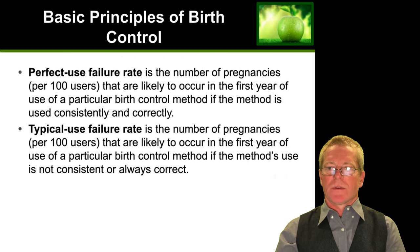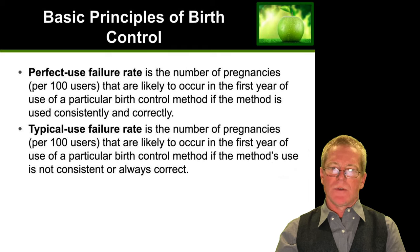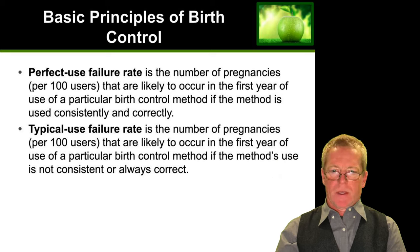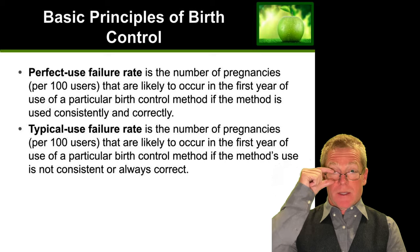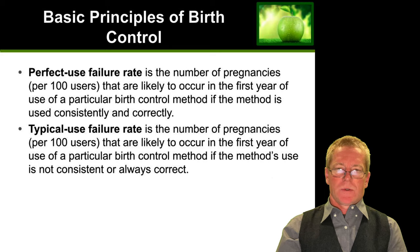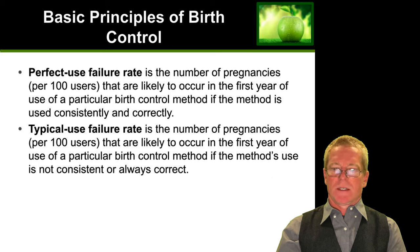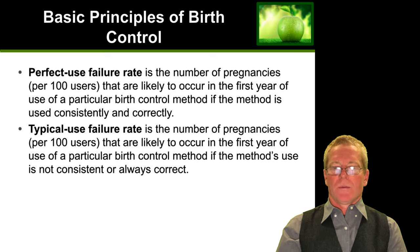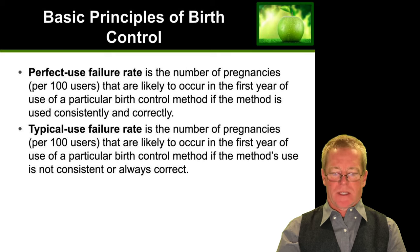Some basic principles of birth control. There's a perfect use failure rate, which is the number of pregnancies per 100 users likely to occur over one year using the method consistently and correctly. There is also a typical use failure rate — the number of pregnancies per 100 users in the first year when the method is used consistently but not always correctly. That's the real-world measure and probably the most reliable for this discussion.